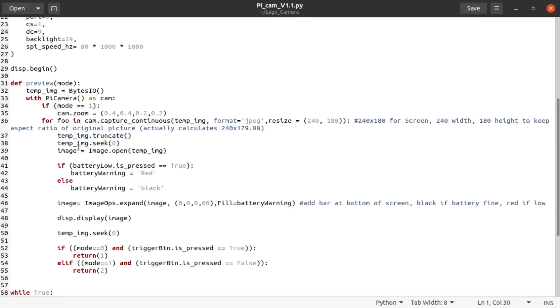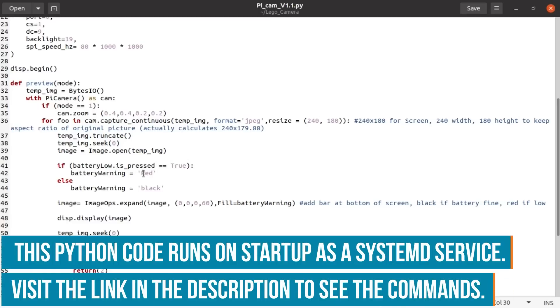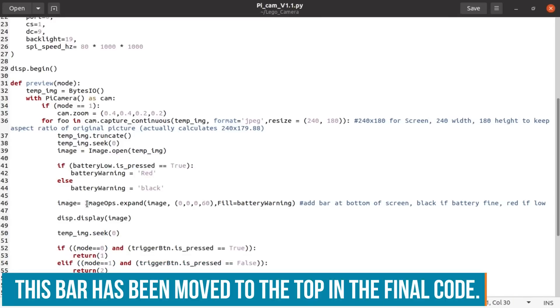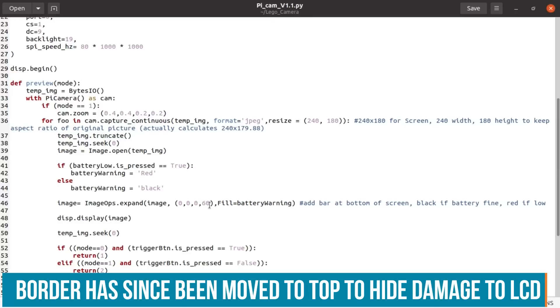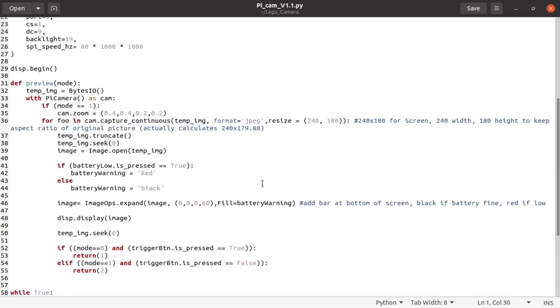It then opens the image that the camera is taking. We are then going to look at that battery low button. So the LiPo shim will pull that pin low if the LiPo battery is low. So if it's looking like it's pressed it's being pulled low it's going to set red else it will set black. And then when it's displaying the image the LCD is a different size to our picture. So it will expand the spare space around the image which is a border on the bottom of 60 pixels and it will fill it with the colour of the battery warning. So if the battery's fine that bar will be black. If the battery is low it will be red.